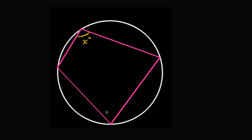Because if this angle is 180 minus x, then 180 minus x plus x is going to be 180 degrees. I encourage you to pause the video and see if you can do that proof. The hint is that it's going to involve the measure of the arcs that the various angles intercept.